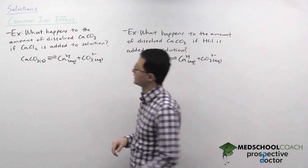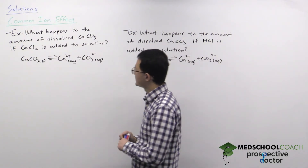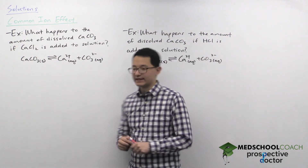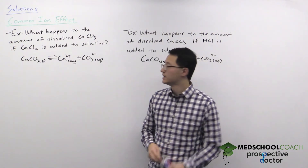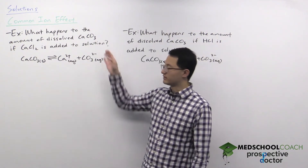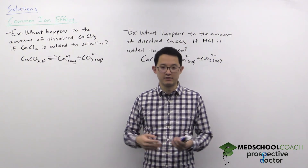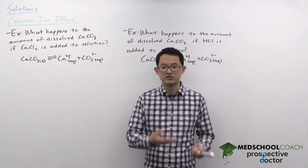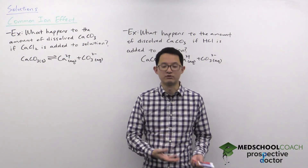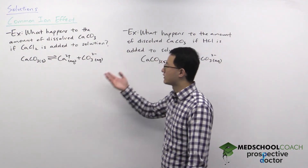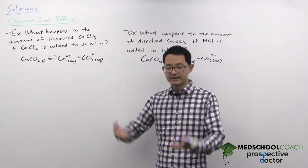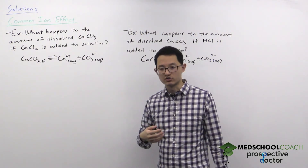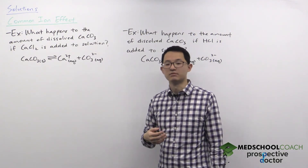In the first example, the question is: what happens to the amount of dissolved calcium carbonate if calcium chloride is added to solution? Since we're talking about dissolved calcium carbonate, that implies we already have a solution with some calcium carbonate dissolved in it, and now we're asking what happens if we add calcium chloride.